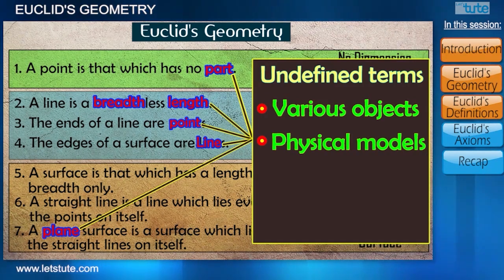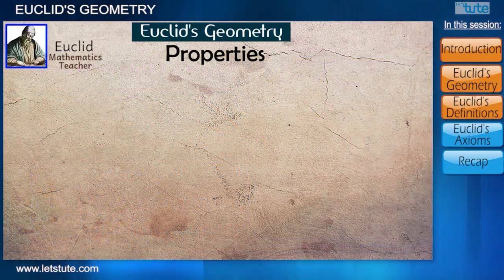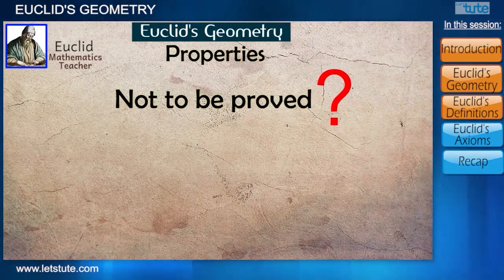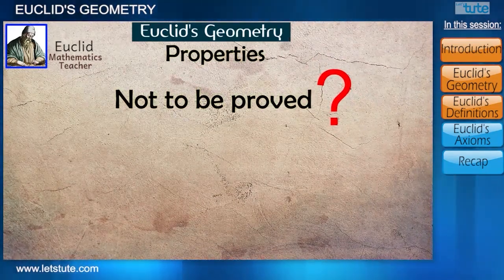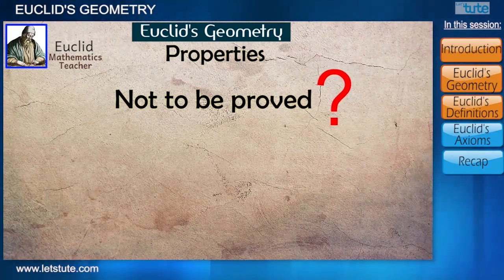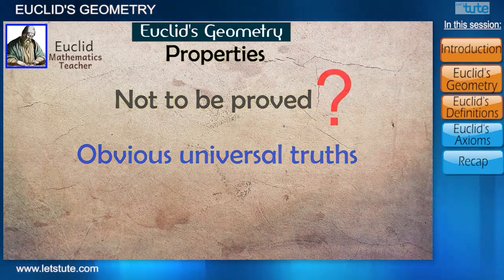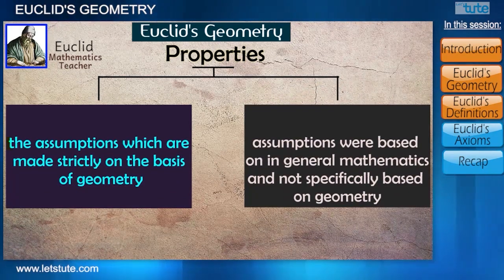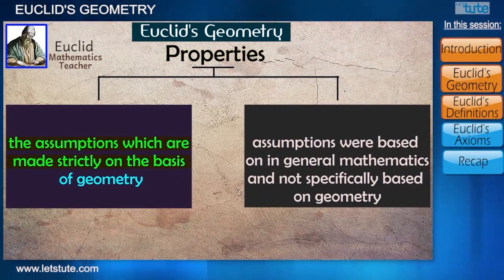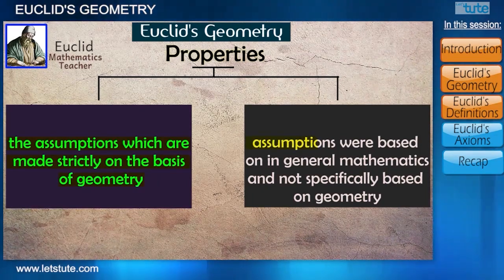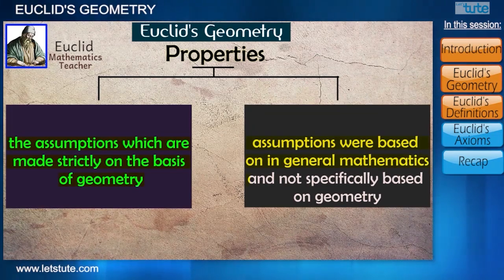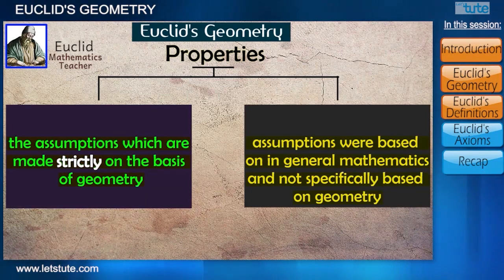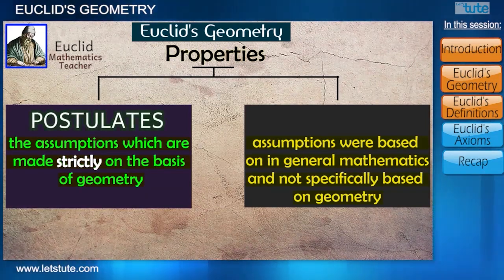After these definitions, Euclid assumed some properties which were not to be proved. You may ask why we need proofs for almost everything in geometry — these properties did not require proof because they were obvious universal truths. He divided these properties into two types: assumptions made strictly on the basis of geometry, and assumptions based on general mathematics and not specifically on geometry.